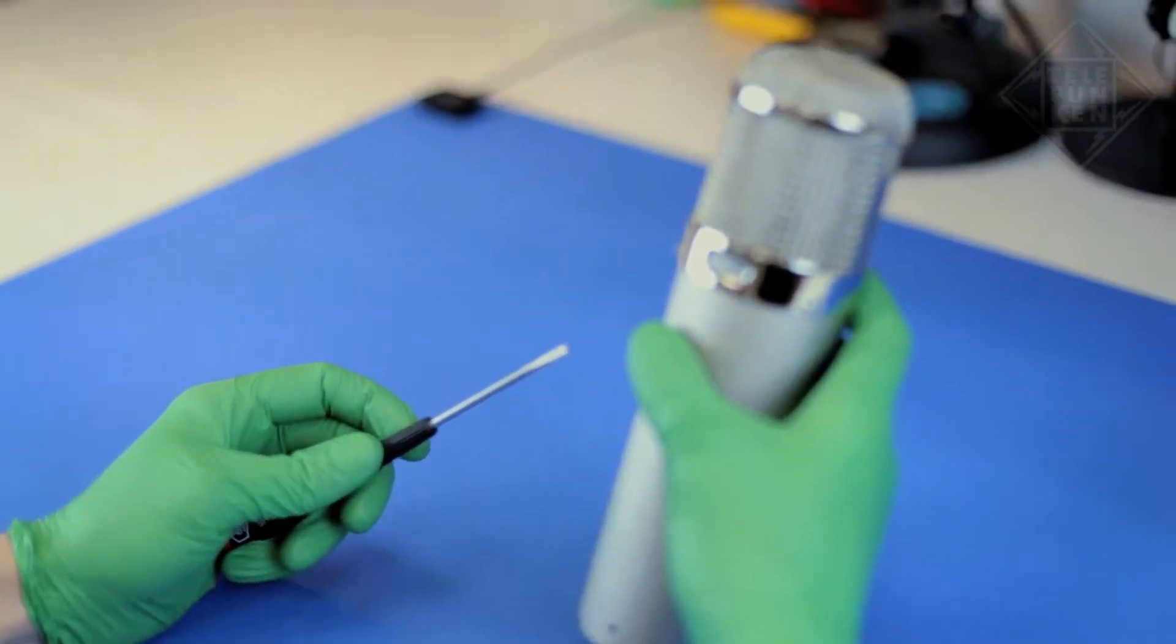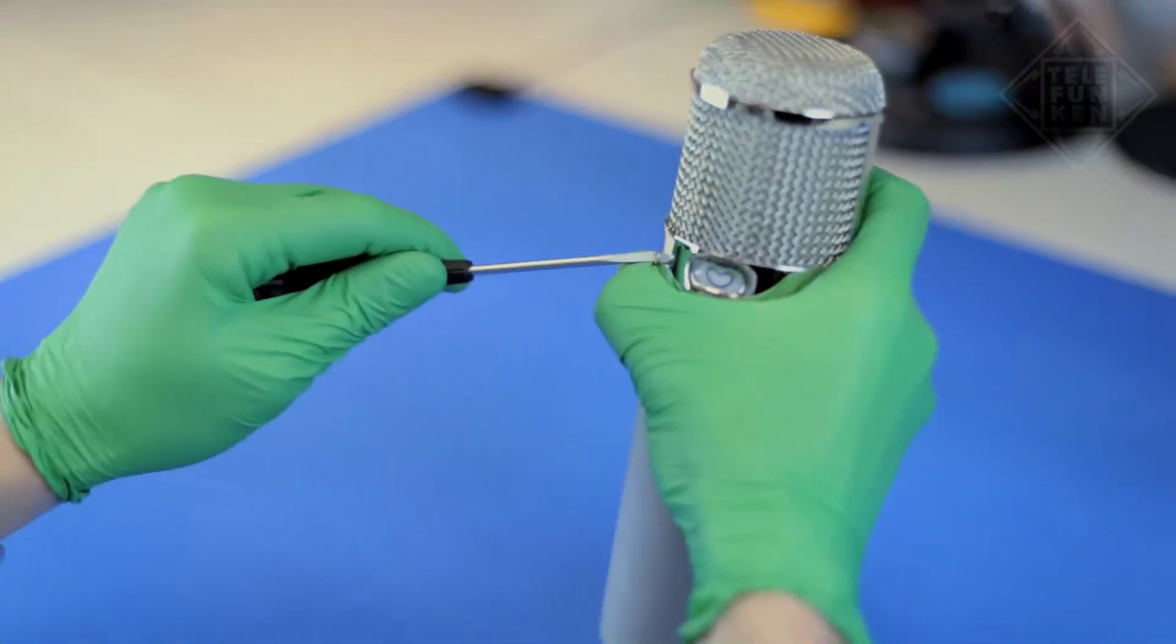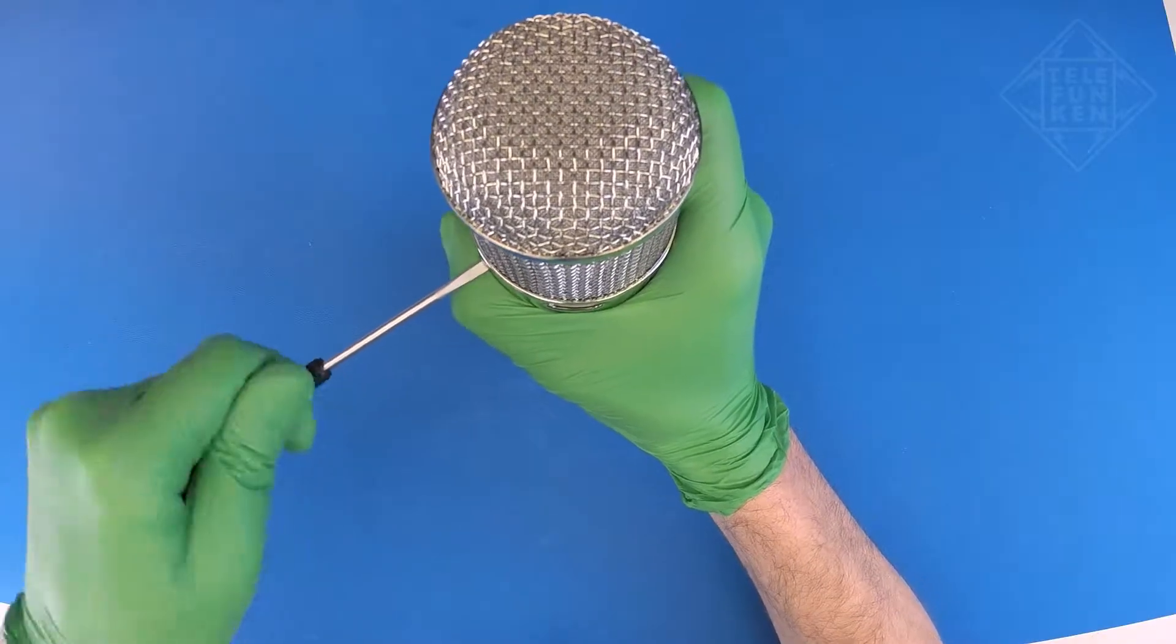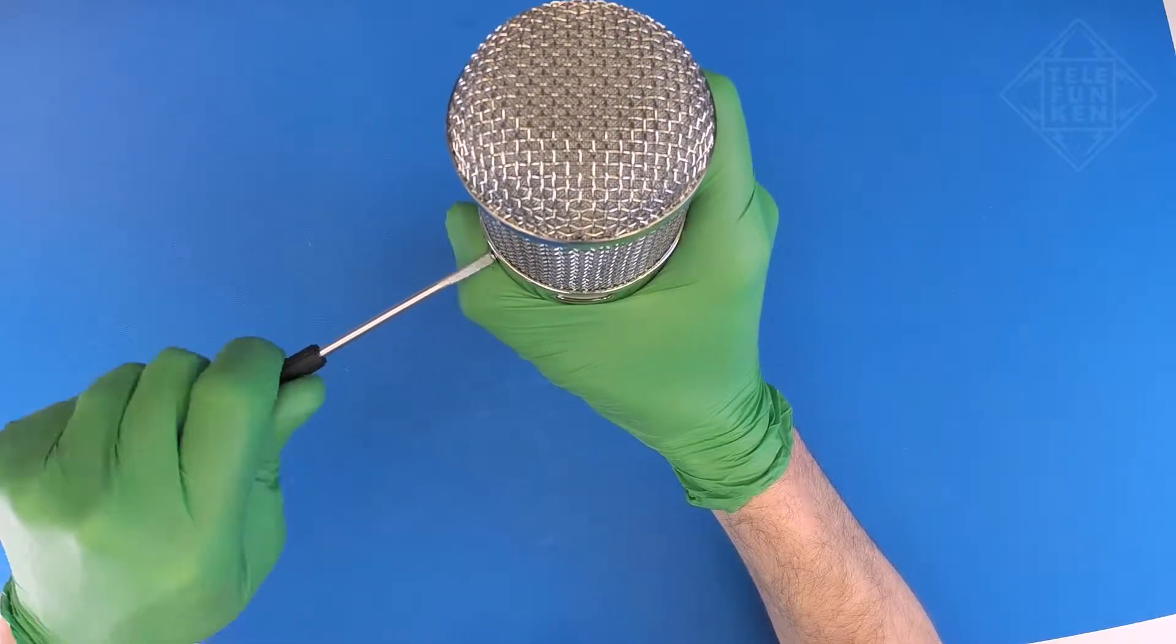Hold the microphone firmly and remove the three head grille screws. Use your thumb as a guide so that you don't slip and scratch the microphone.